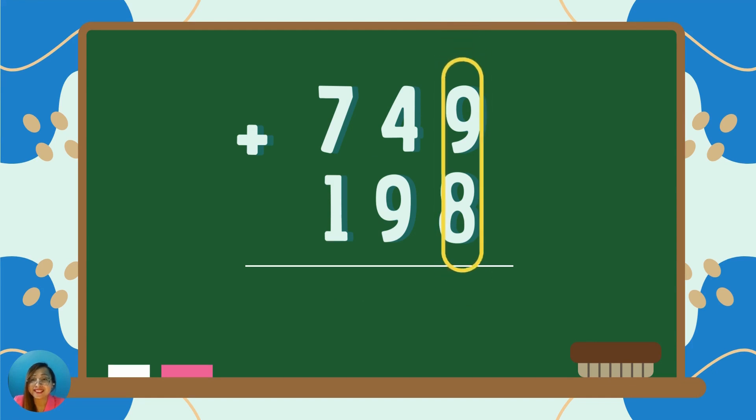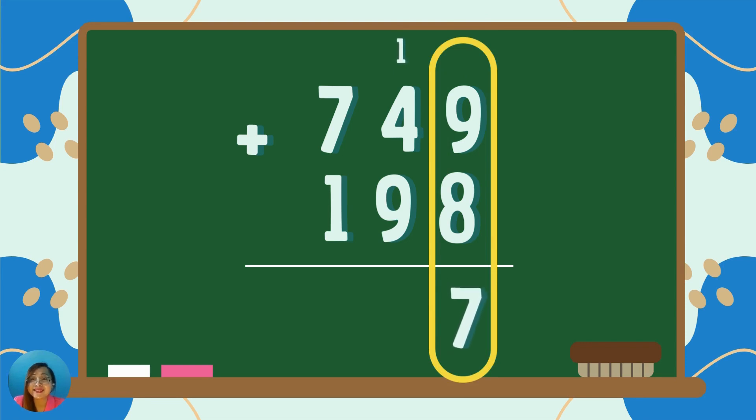Add the one's digits. In this case, the one's digits are 9 and 8. 9 plus 8 is equal to... Good job! 17. The sum exceeds 9. Yes or no? Yes! 17 exceeds 9.